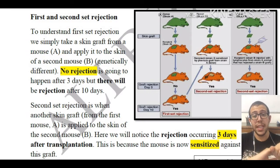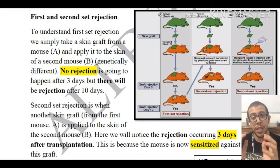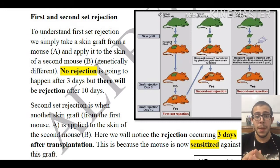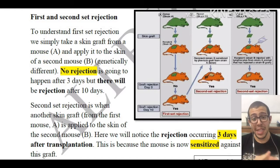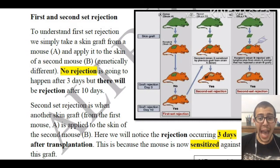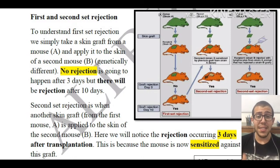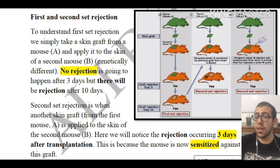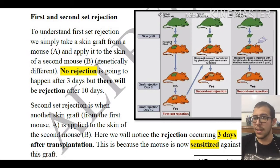In the second set rejection, we take another bunch of cells from mouse A and apply them to the skin of mouse B. What happens here is a rapid response — the rejection occurs within the first three days. So we notice that the rejection happens after just three days. What explains this? Why is this the case?